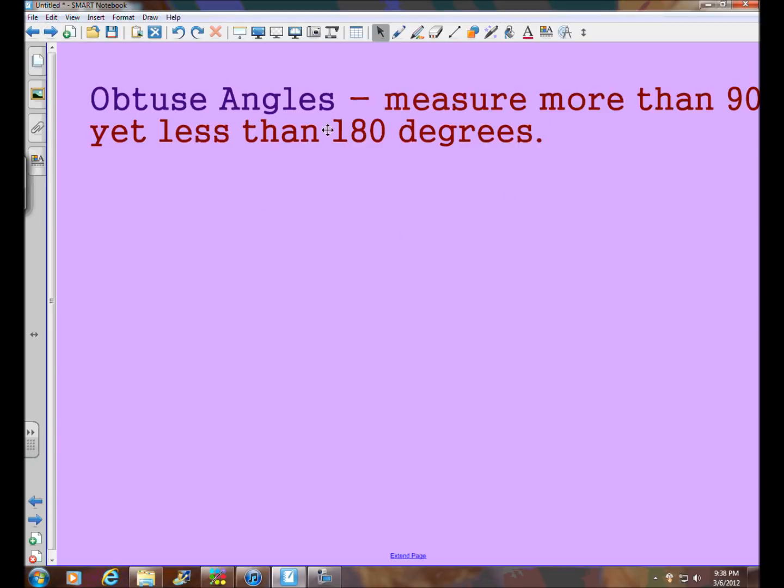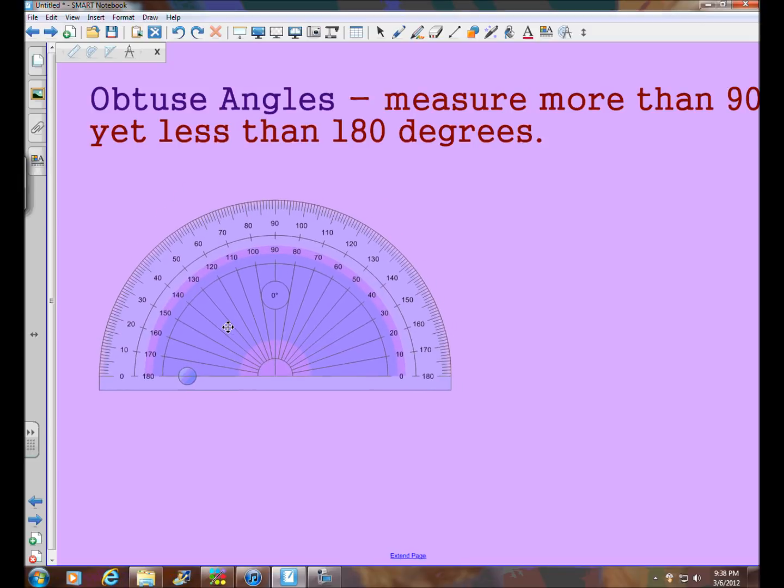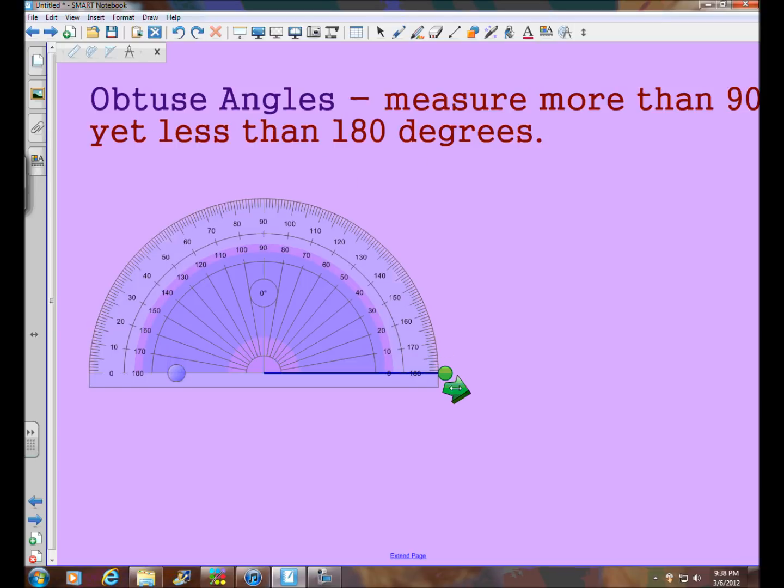Now we'll move on to a different type of angle. Now these are obtuse angles that we're going to be looking at on this page. And obtuse angles measure more than 90 yet less than 180 degrees. So I think the best way to show you that is to bring out our protractor again.